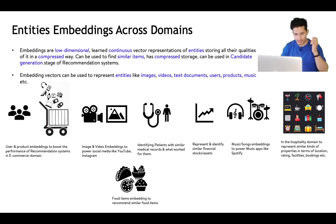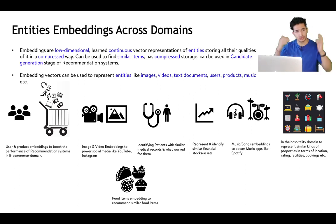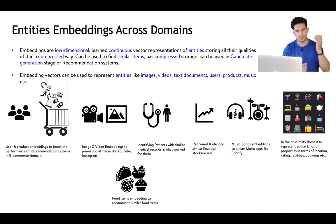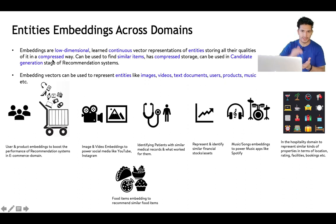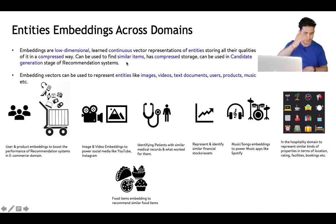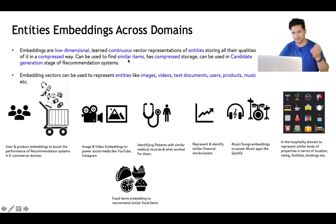Embeddings are low-dimensional, continuous vector representations of entities storing all their qualities in a compressed way. They can be used to find similar items — once you have the vector representation, you can find which other entity has a similar vector. Since it's a compressed form, it can be stored very efficiently, and it can be used in recommendation systems and candidate generation.